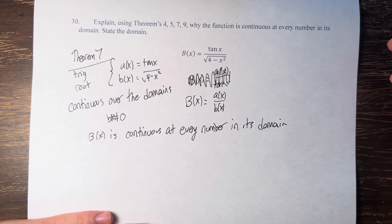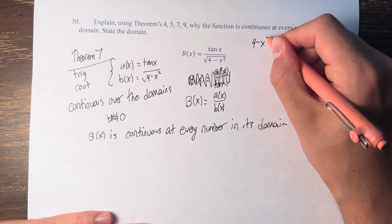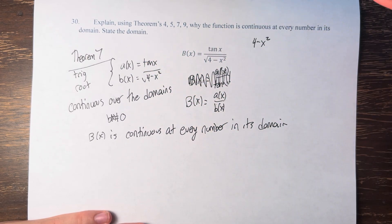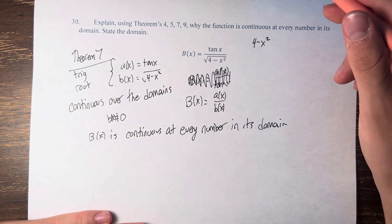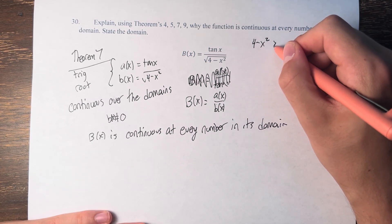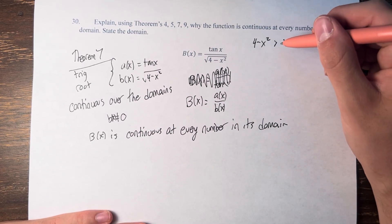So we can think of this as 4 minus x squared, it can't be equal to 0, and it can't be less than 0, so it has to be greater than 0.